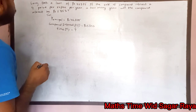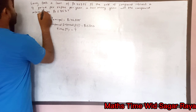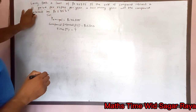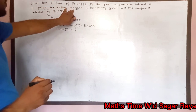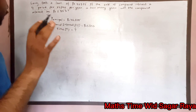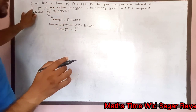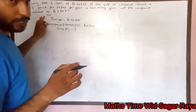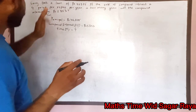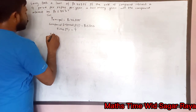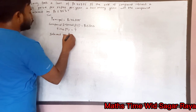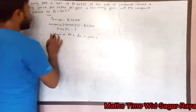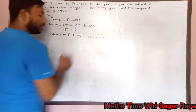The rate is given as four paisa per rupee per year. This means for one rupee borrowed for one year, we have to pay four paisa. Now we need to convert this rate into rupees. Interest on rupee one for one year is four paisa.